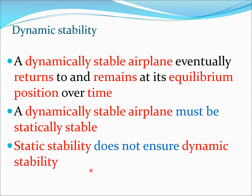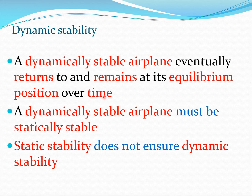A dynamically stable airplane eventually returns to and remains at its equilibrium position over time. All these words are important: it returns to its equilibrium position and remains there. An airplane that returns but then departs again is not dynamically stable. Also important: a dynamically stable airplane must be statically stable, but the reverse is not true — static stability does not ensure dynamic stability.